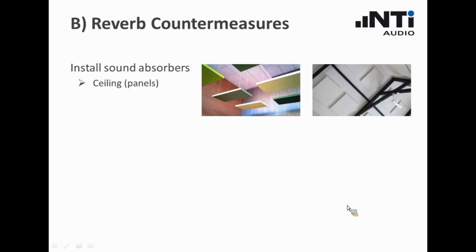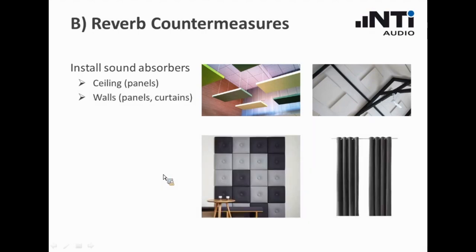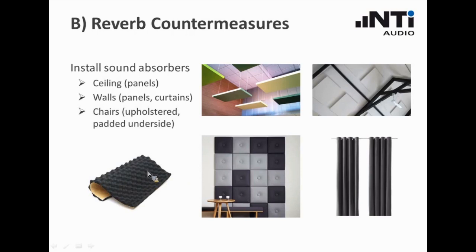What can you do when the RT60 is too high? Well, you can install sound absorbers, for example on the ceiling, whether they are hanging or whether they are stuck to the ceiling. You can install them at the wall or use some sound-absorbing curtains. A third possibility would be to use this self-adhesive sound-absorbing foam and stick that to the underside of tables and chairs. This is also an applicable and quite efficient measure to reduce the RT60 time.